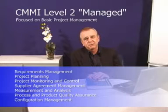At level one, there are no process areas. At level two, basic project management, we have requirements management, project planning, project monitoring and control, supplier agreement management, measurement analysis, process and product quality assurance, and configuration management. Those are the seven fundamental process areas at level two.